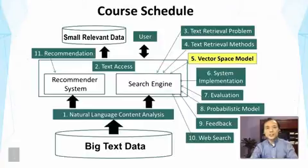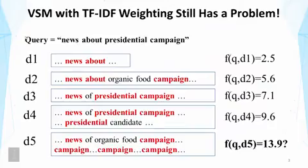In this lecture, we continue the discussion of vector space model. In particular, we're going to talk about TF transformation. In the previous lecture, we derived a TF-IDF weighting formula using the vector space model.